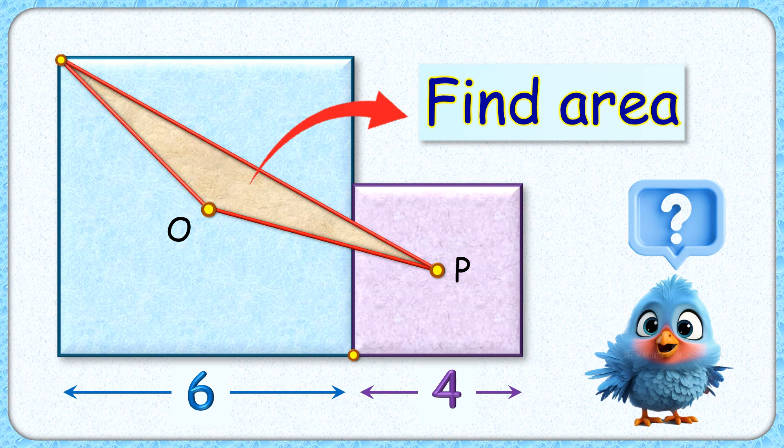Okay, this interesting question given to us are two squares with side length 6 and 4 centimeters. Point O and point P, these are centers of the square. The triangle is formed by joining the vertex and point O and point P. The exciting part is with this limited data we have to find area of this triangle.